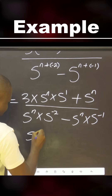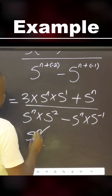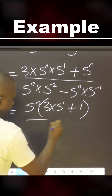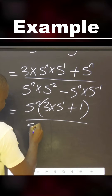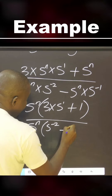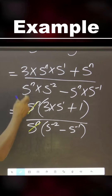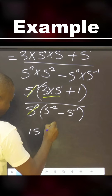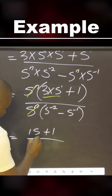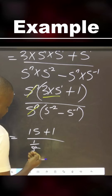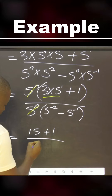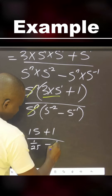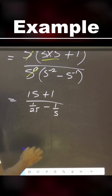What is common here? 5 raised to power n. So we factor: 5^n multiplied by (5 raised to power 1 plus 1). What is common here? 5 raised to power n — this and this will cancel. What we have here now is 15 plus 1, all over 1 over 5 raised to power 2, which is 1 over 25, minus 1 over 5.